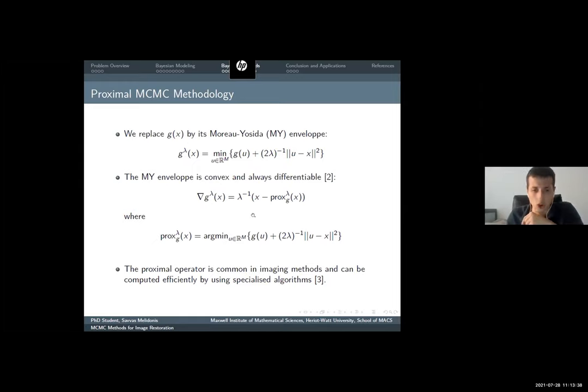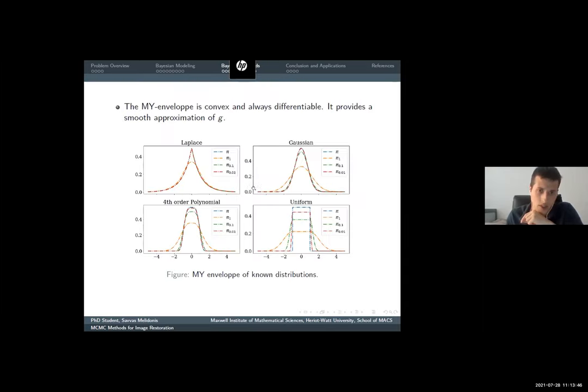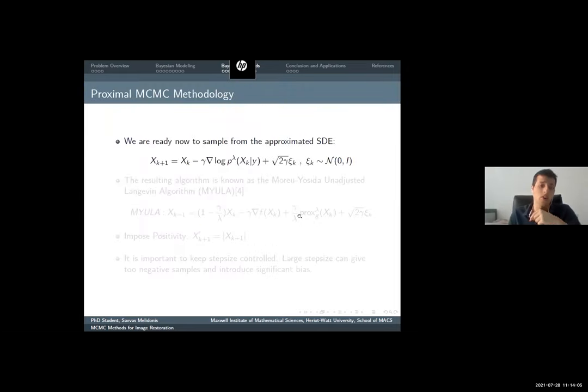The proximal operator seems quite technical, but my point is, it is common in imaging sciences, and now it can be computed efficiently by using specialized algorithms. This is an example. You can see here the uniform distribution with the blue color. The other colors are the envelopes. You can see that as lambda becomes smaller and smaller, we have a better approximation.